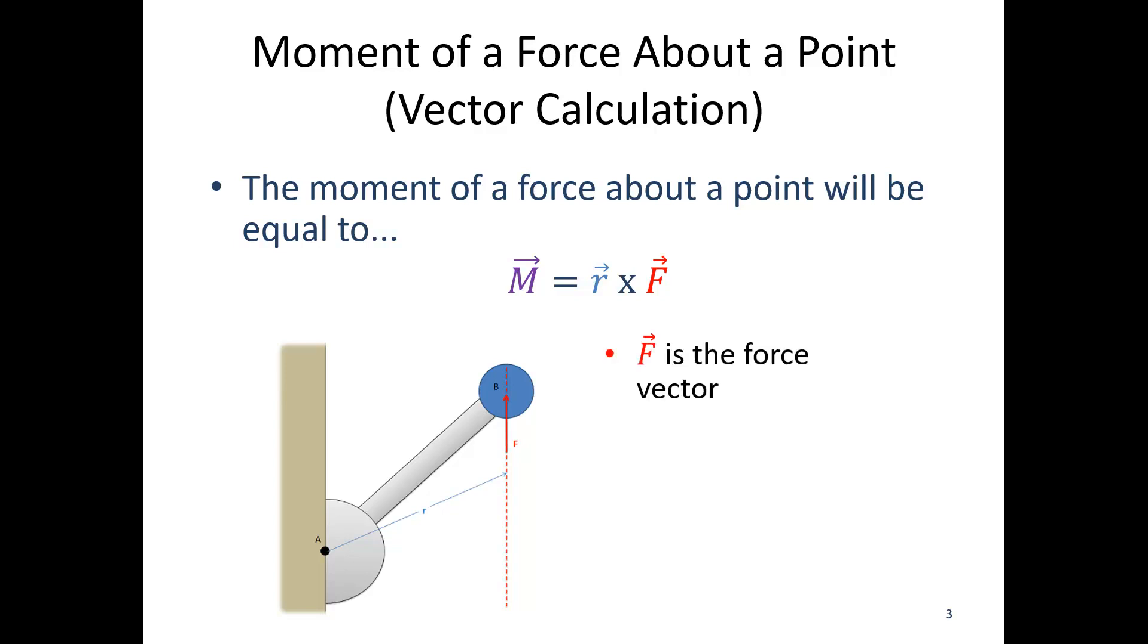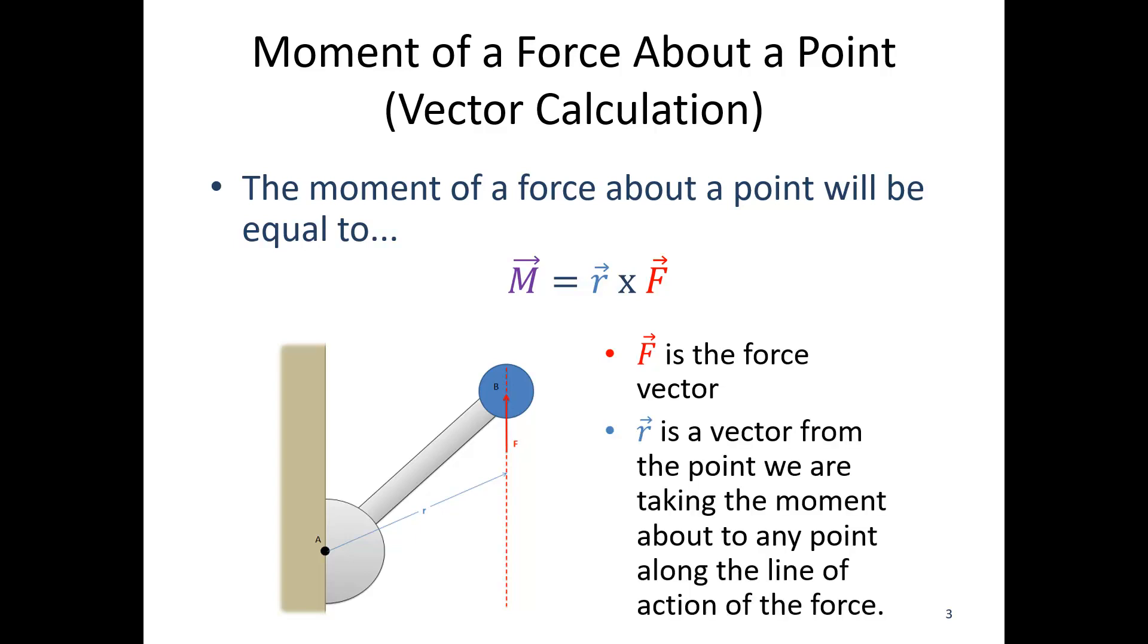f is going to be my force vector, so I just need to list that out in terms of x, y, and z components. And r is going to be a vector from the point we're taking the moment about, so in this case starting at point a, and it can go to anywhere on the line of action of the force. So long as it makes it to the line of action of the force, r has many possible options.